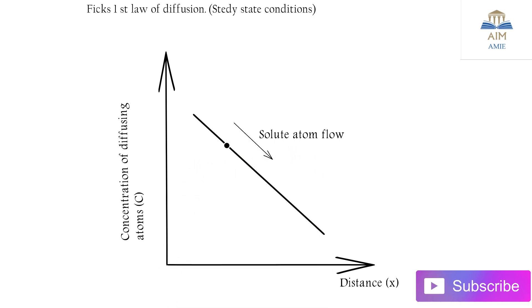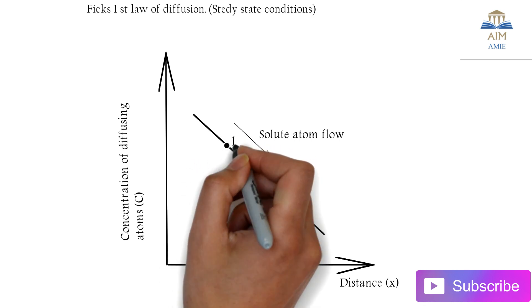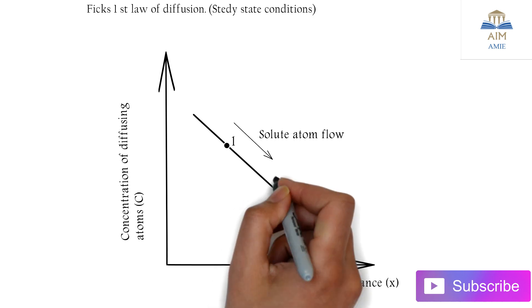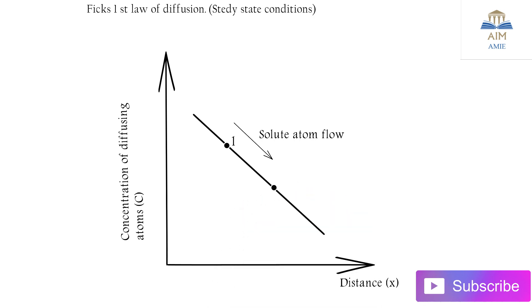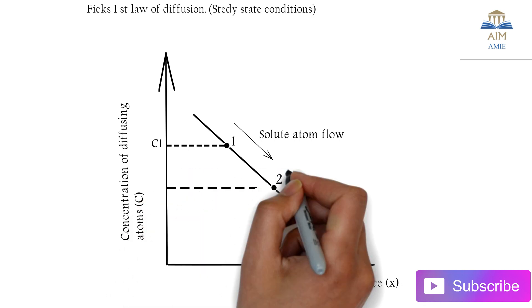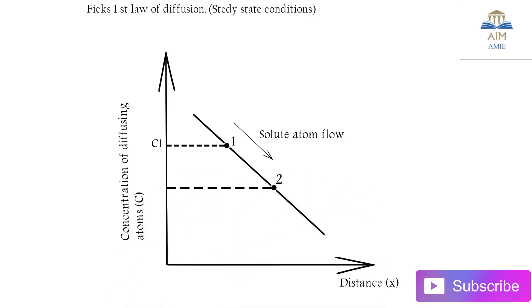This is an atom at plane one, this is the second atom at plane two. The concentration at atom one is C1, which is at the higher side, and the concentration of atom two is C2, which is on the lower side.